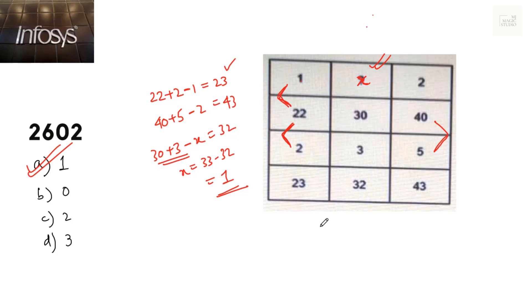It's always advisable in these kinds of grid questions where we have only a single grid — try to frame an equation row-wise or column-wise, fit it in, check it with all columns or rows, and very easily we can find the answer.